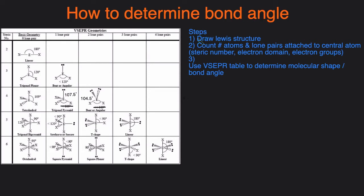So the steps are number one, draw the Lewis structure. Number two, count the number of atoms and lone pairs attached to the central atom, and that's gonna give you the steric number, electron domain, also called the number of electron groups. And then step three, we're gonna use the VSEPR table, which is what you see right here, to determine the molecular shape, and once you have the molecular shape you'll also get the bond angle.